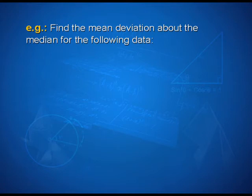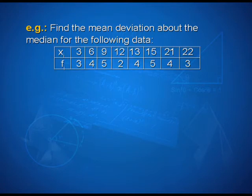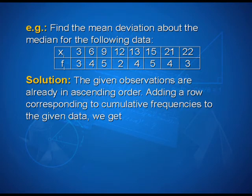Let us look at one more example. Find the mean deviation about the median for the following data: xi = 3, 6, 9, 12, 13, 15, 21, 22 with corresponding frequencies fi = 3, 4, 5, 2, 4, 5, 4, 3.